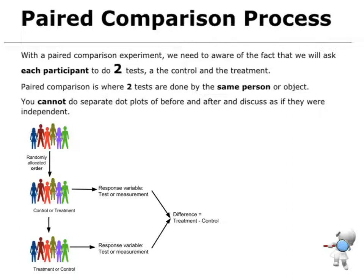When we've got a paired comparison, every participant is going to be doing two tests. So if I was doing some fitness tests, I would do a fitness test, do the activity, and then do another fitness test so I can compare the results. As soon as you have two tests being done by the same person, we can't do separate dot plots of before and after, because one of the assumptions of that is that they are independent groups, and they would not be independent.